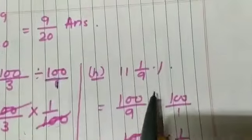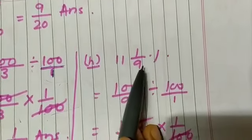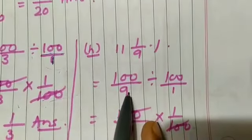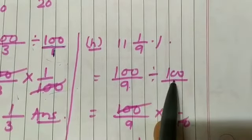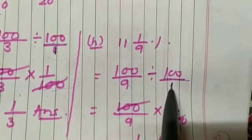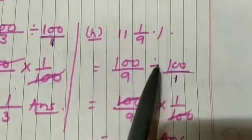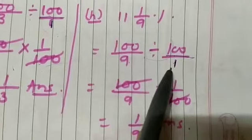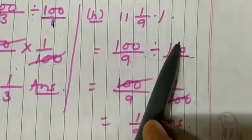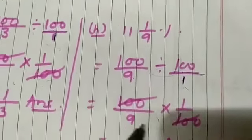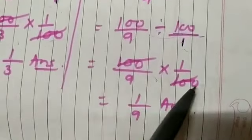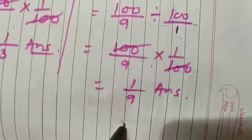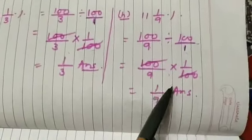One more question: H number — 11 whole 1 by 9 percent. Converting to improper fraction: 9 times 11 equals 99 plus 1 equals 100, so 100 by 9. Then divide by 100: 100 by 9 into 1 by 100. Again 100 and 100 cancel. So 1 by 9 is the answer.